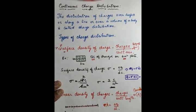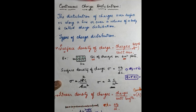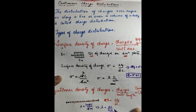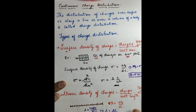Consider a wire of length 6 meters. The total charge on it is 18 coulomb. So lambda equals 18 coulomb divided by 6 meters, which gives 3 coulomb per meter. So on every 1 meter there is 3 coulomb of charge. This is the linear density of charges — 3 coulomb per meter.